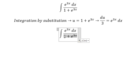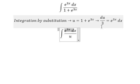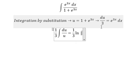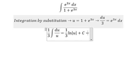So this one we change for u. This one we change for du over 3, and we get 1 over 3 ln of the absolute value of u, and we see it here.